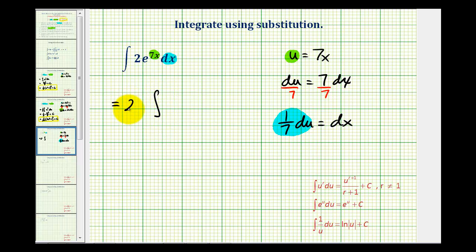Let's go ahead and factor the 2 out. And we'll have e to the u. And then dx is equal to 1/7th du. So we'll pull the 1/7th out, and then we have du.